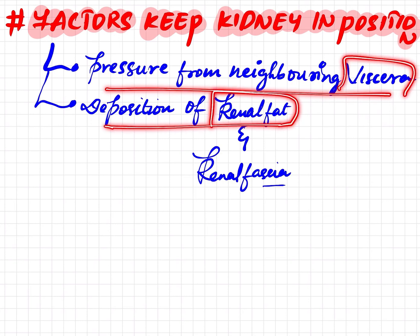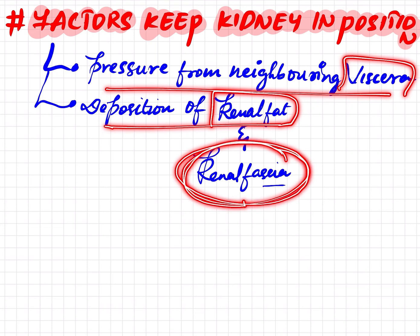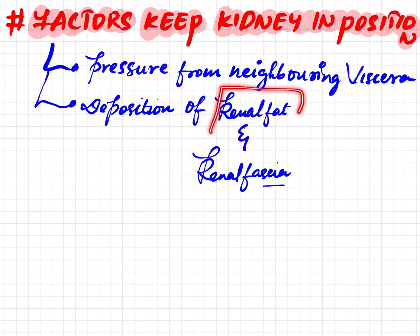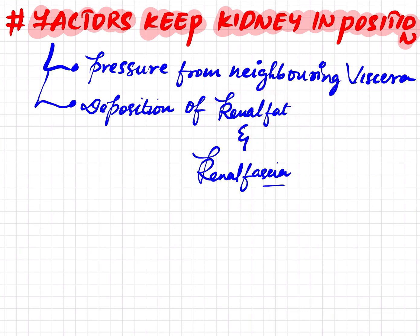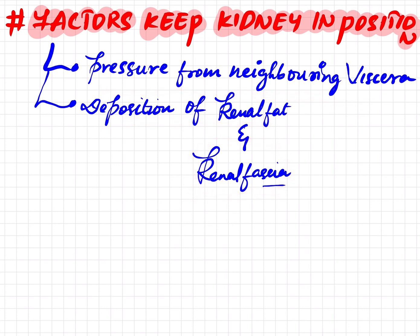The structures helping the kidney to stay in its position are: pressure from the neighboring viscera, the deposition of renal fat, and the renal fascia. The renal fascia helps in attaching the kidney to the posterior abdominal wall, and the renal fat — like the perinephric fat — when deficient causes downward displacement of the kidney. This is all about the coverings of the kidney. Thank you for watching.